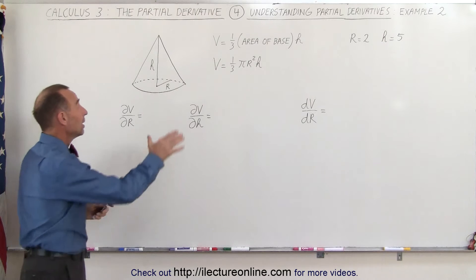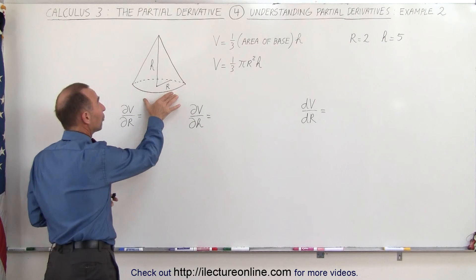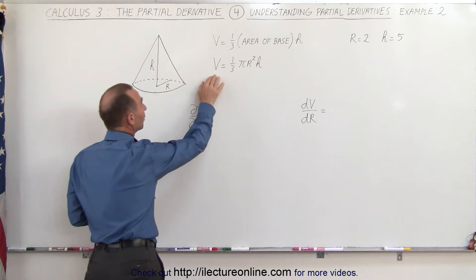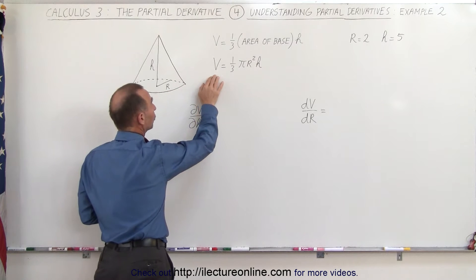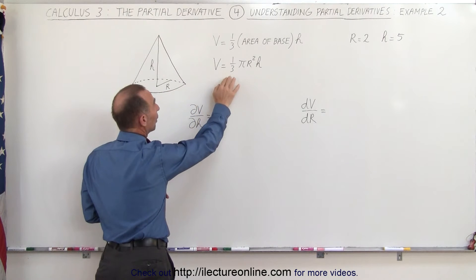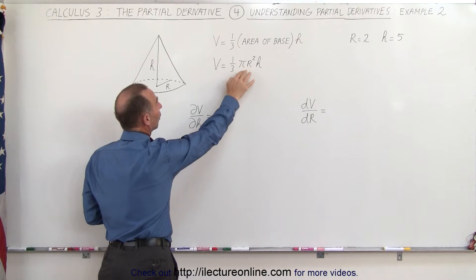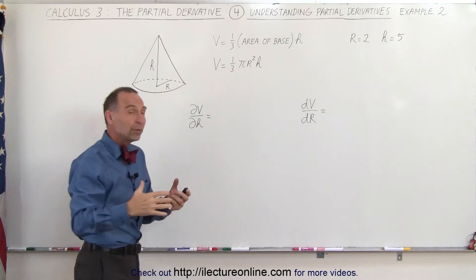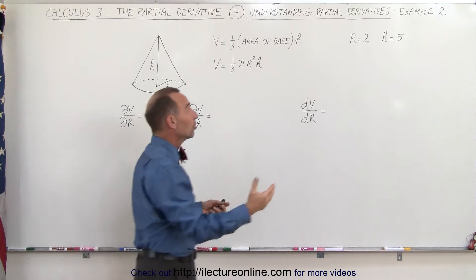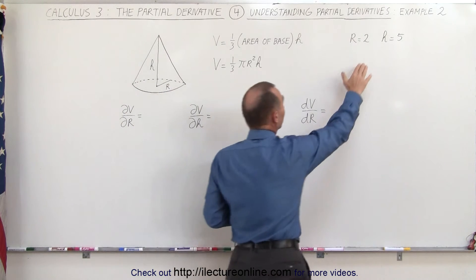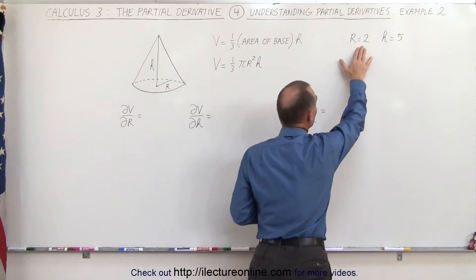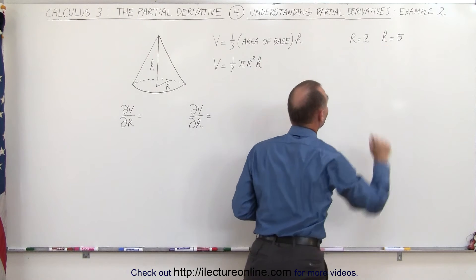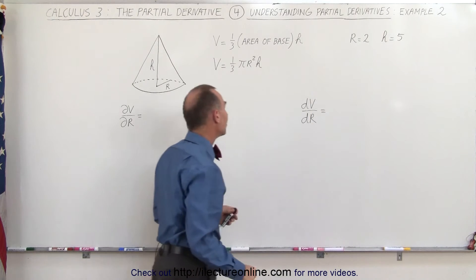We have the same example as before where the volume of a right circular cone is equal to one-third pi r squared times h. The initial conditions are that the radius is two units and the height is equal to five units.